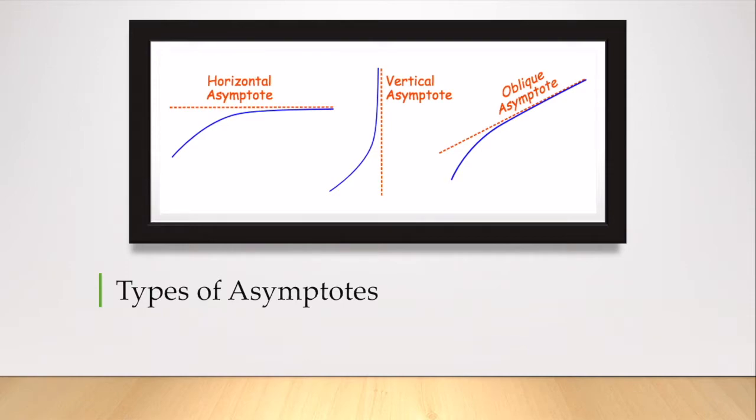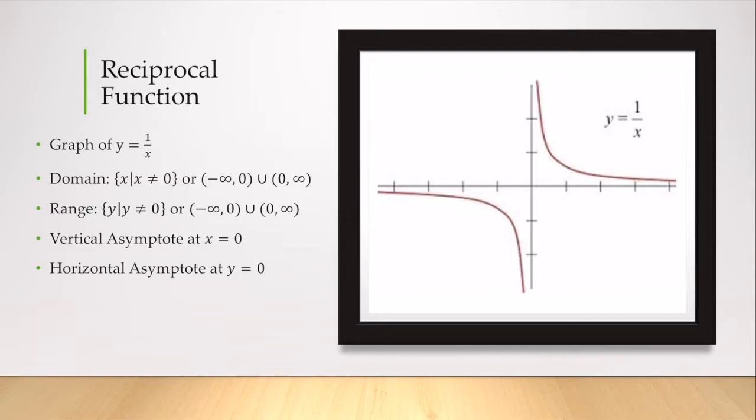Let's look at the simplest rational function. This is the reciprocal function, which is y equals 1 over x. We see that x cannot equal 0. Here's where x is 0, and because x can never equal 0, my graph can never cross the line where x equals 0. This becomes our vertical asymptote.